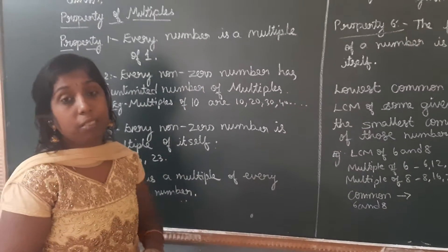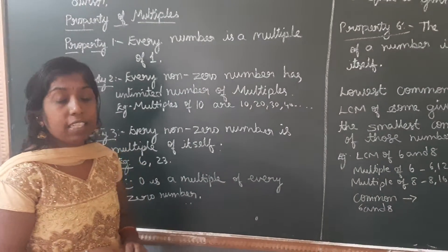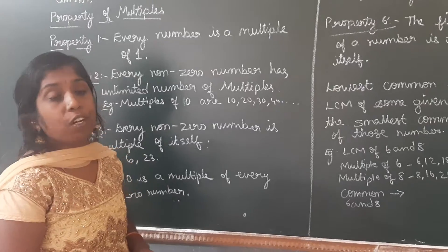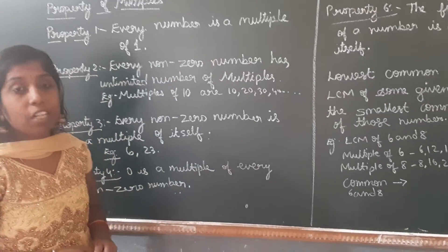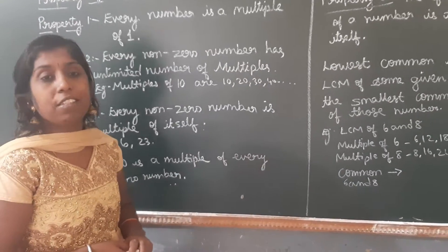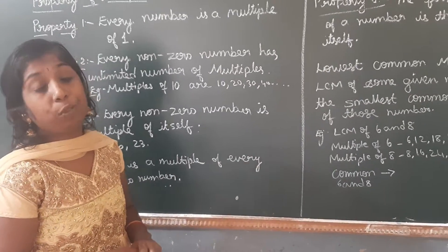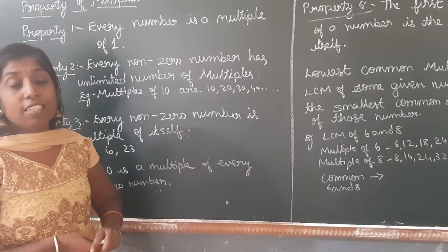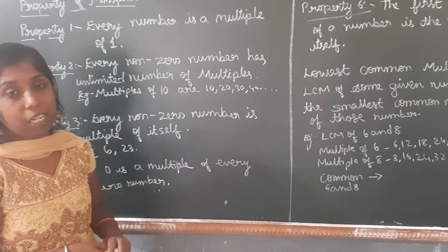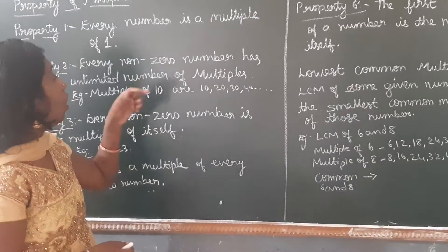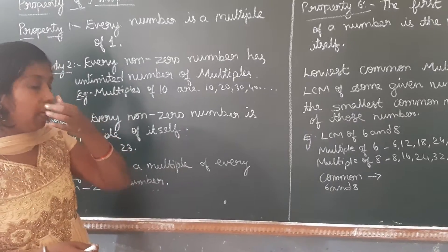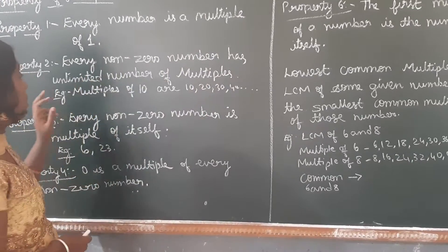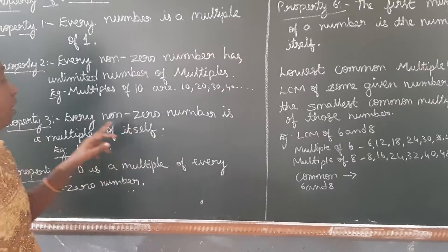Every non-zero number has unlimited multiples. For example, the multiples of 2 are: 2, 4, 6, 8, 10, 12, 14, 16 — like that. It has n number of multiples. So every non-zero number has an unlimited number of multiples.